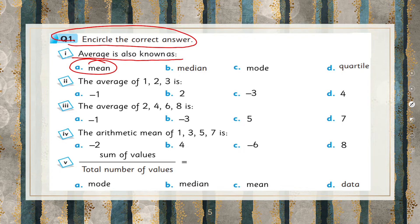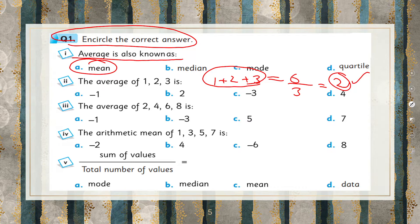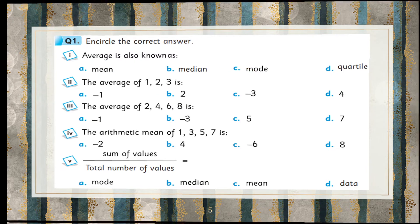Next part: The average of 1, 2, 3 is what? There are 3 numbers. We add these numbers: 1 plus 2 plus 3 equals 6, and divide 6 by the total number of quantities, which gives us 2. That's our answer. Similarly, you have to solve the remaining parts, and the correct option will be the one with 2.